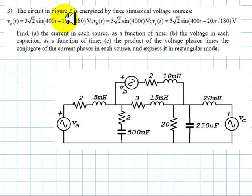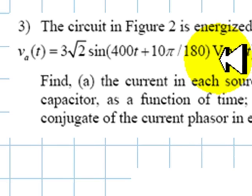The circuit in figure 2 is energized by three sinusoidal voltage sources: Va, Vb, and Vc. The values of those sources are given up here.